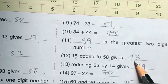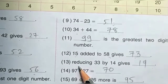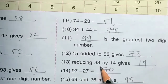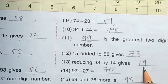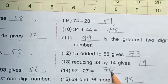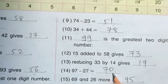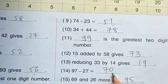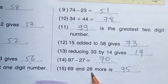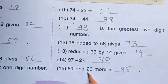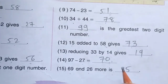Next, number 13: reducing 33 by 14 gives — 33 minus 14 is equal to 19. Next, number 14: 97 minus 27 is equal to 70 — 7 minus 7 is 0, 9 minus 2 is equal to 7, total 70. Number 15: 69 and 26 more — 69 plus 26 is equal to 95. Question number 3 completed.